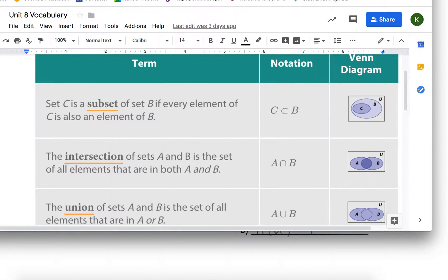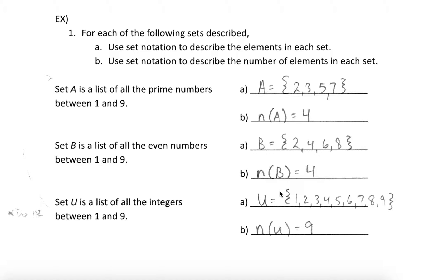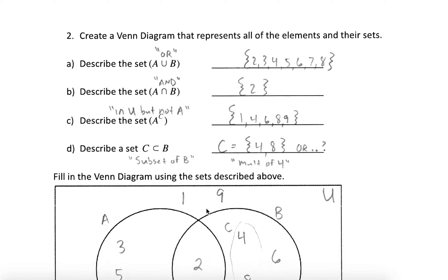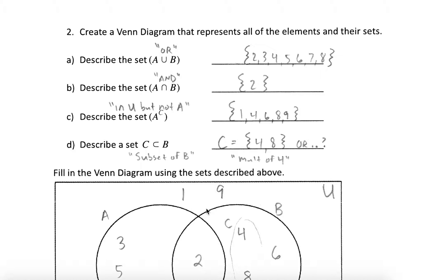Knowing that, we can go back and refer to our sets and practice those relationship symbols, and eventually draw our own Venn diagram. Let's describe the union between sets A and B — that would be all of the elements in A and all of the elements in B put together: 2, 3, 4, 5, 6, 7, and 8. Then the intersection between those two sets — what element is in both of them? Well, the only element in both sets was the number 2. So 2 is the intersection of sets A and B.